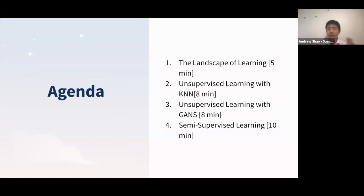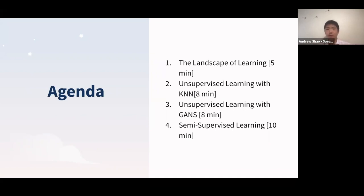In terms of what I want to discuss today, it's mostly focused on unsupervised learning, but we'll start with the landscape of learning in general — specifically supervised learning — then dive into unsupervised learning with K-means and classification using the K-nearest neighbor algorithm. Then I'll cover GANs, or generative adversarial networks, producing custom-made digits in TensorFlow, and finally discuss semi-supervised learning and its applications in competitions like Kaggle, including noisy student learning and pseudolabeling in general.